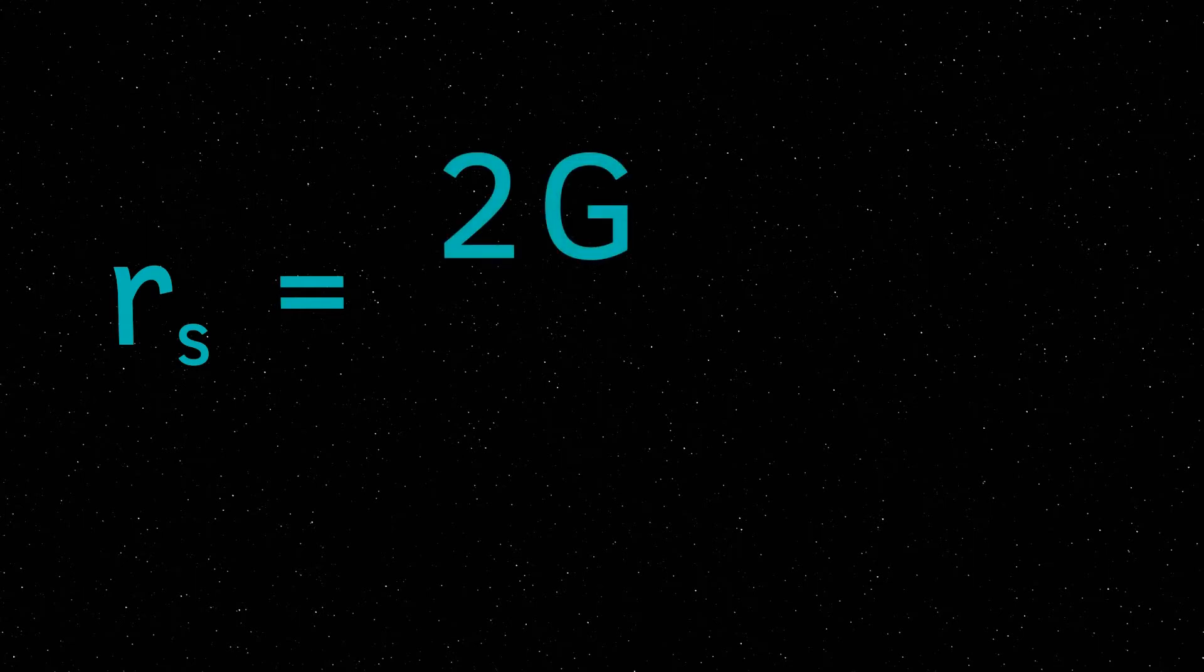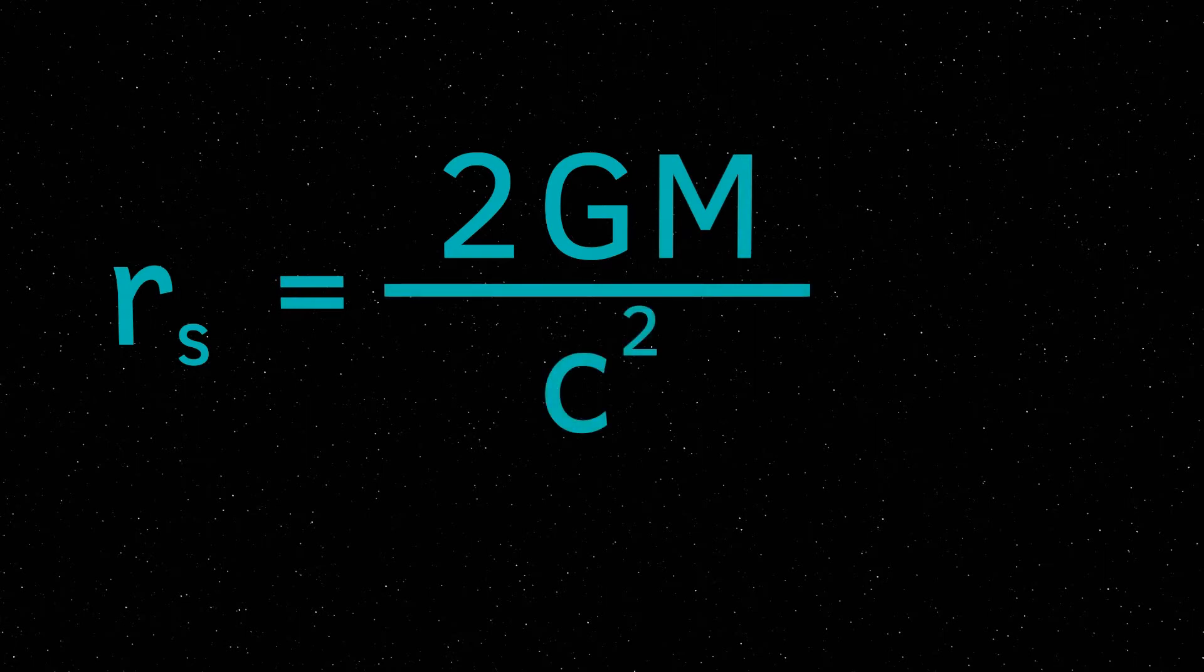The equation for the Schwarzschild radius is given by rs, that's the radius that we're looking for, is equal to two times the gravitational constant, and we've come across that already, times the mass of the body, divided by c squared, which is the speed of light squared.